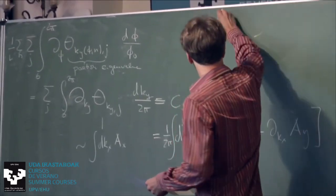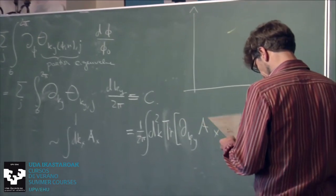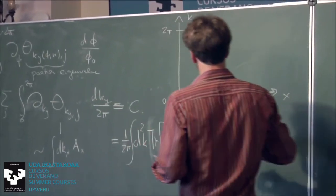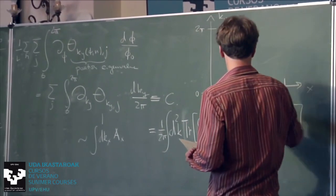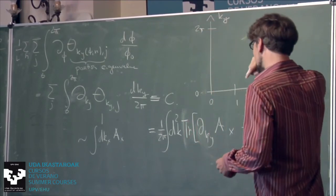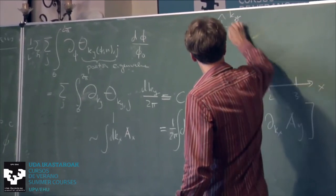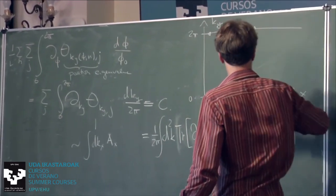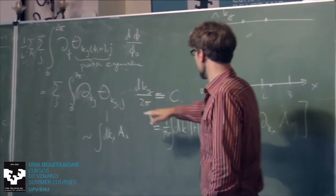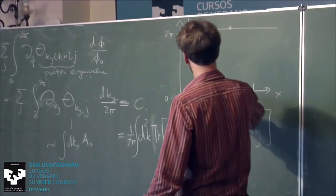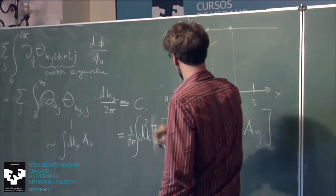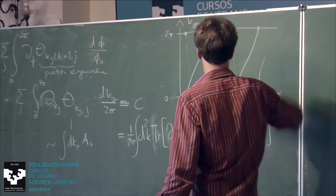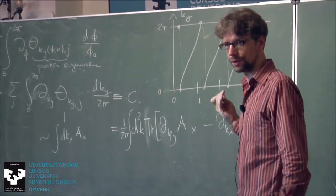How do we pictorially understand this? We have ky going from 0 to 2π, and along x we have unit cells 0, 1, 2, etc. With one occupied band, the Wilson loop spectrum must satisfy the same value at ky = 0 and ky = 2π. For a trivial winding number the eigenvalue is flat, but to get Chern number 1 it has to wind once across the Brillouin zone — that's how charge gets pumped from one side of the cylinder to the other.